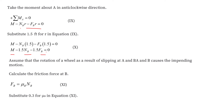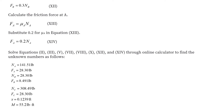The friction force at point B equals the coefficient of friction at point B times the normal reaction at point B — equation 11. Substituting the coefficient of friction at B = 0.30: Fb = 0.3·Nb — equation 12. Similarly, the friction force at point A equals the coefficient of friction at A times the normal reaction at A — equation 14. Solving equations 2, 3, 5, 7, 8, and 10 together gives all unknowns.